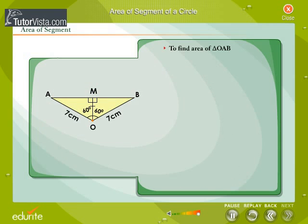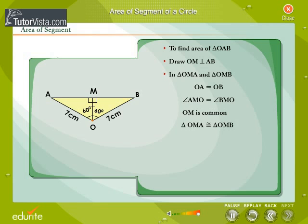We now find area of triangle OAB. We draw OM perpendicular to AB. Consider triangle OMA and OMB. OA is equal to OB since they are the radii of the same circle. Angle AMO is equal to angle BMO since each angle is equal to 90 degrees. OM is common to both the triangles. Triangle OMA and triangle OMB are congruent by RHS congruence.